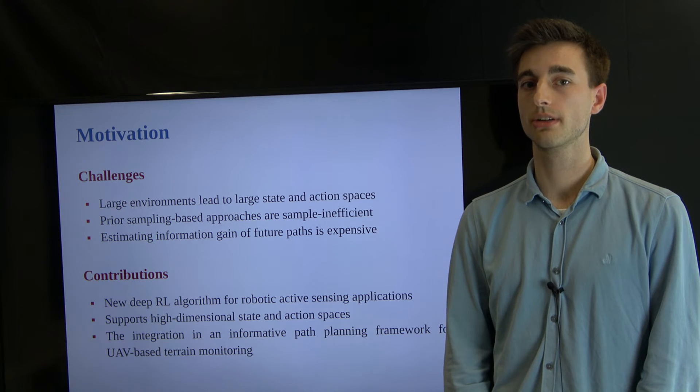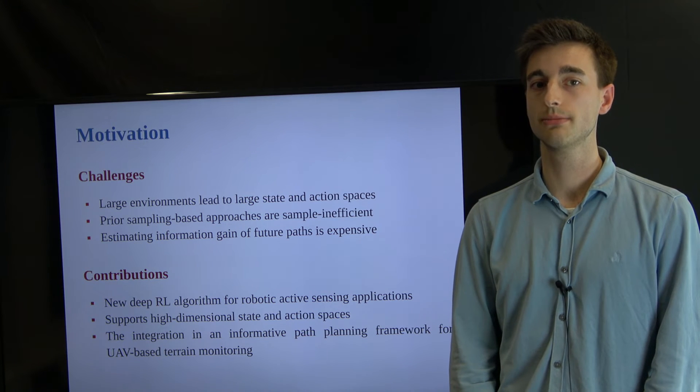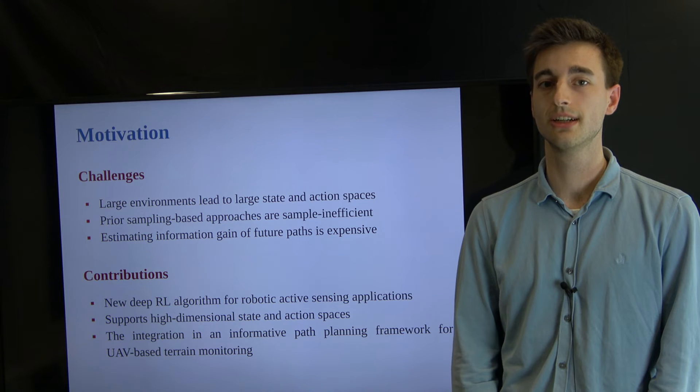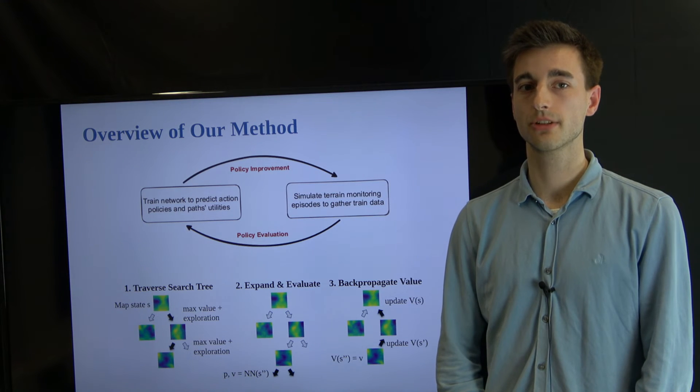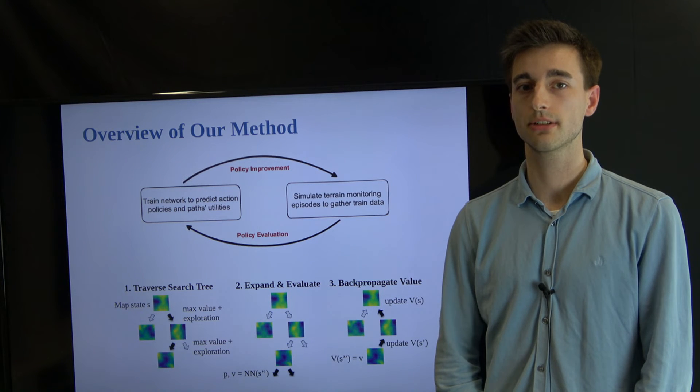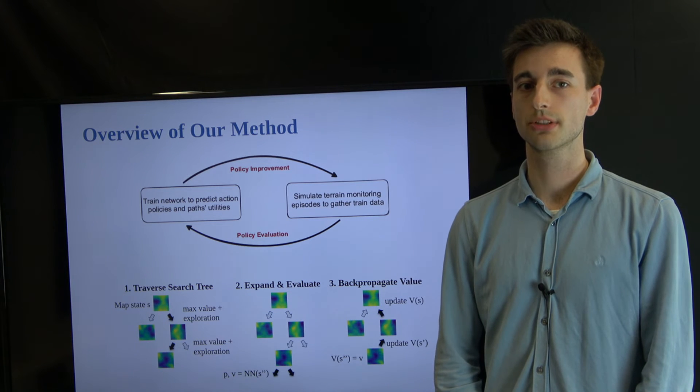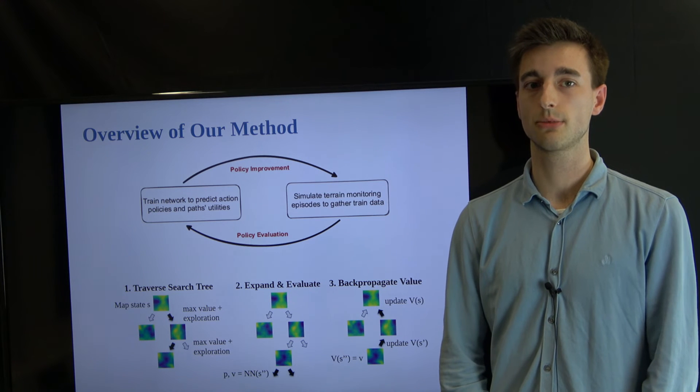To address this, we propose a new RL-based informative path planning framework suitable for active sensing and show its integration for UAV-based terrain monitoring. Inspired by recent advances in reinforcement learning, our method combines Monte Carlo Tree Search with a convolutional neural network to learn information-rich actions in adaptive data-gathering missions. By replacing the predictive planning with a simple tree search, we achieve efficient online re-planning which is critical for mobile robots.